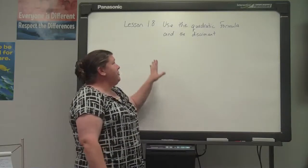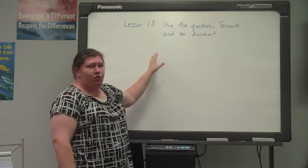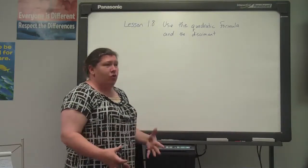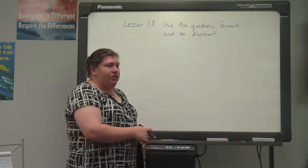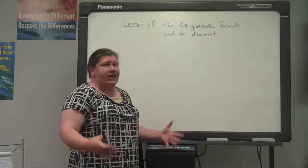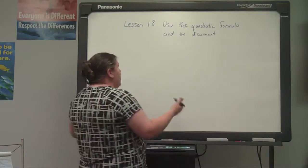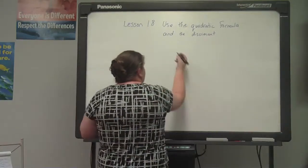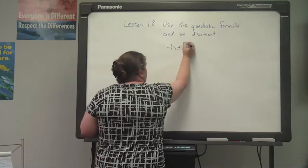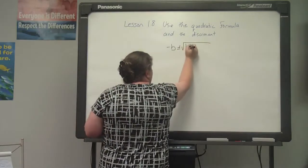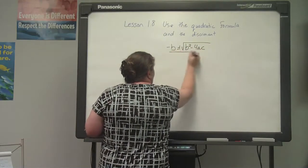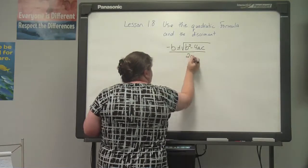Today's lesson is using the quadratic formula and finding the discriminant. The quadratic formula can be used to solve for any quadratic equation. The quadratic formula is negative b plus or minus the square root of b squared minus 4ac, all over 2a.